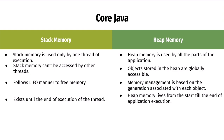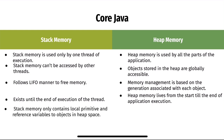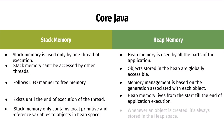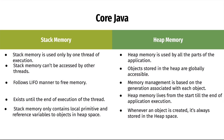Stack memory only contains local primitives and reference variables to objects in the heap space, whereas heap memory is where objects are always stored whenever they are created. This is one of the important differences between stack and heap memory.